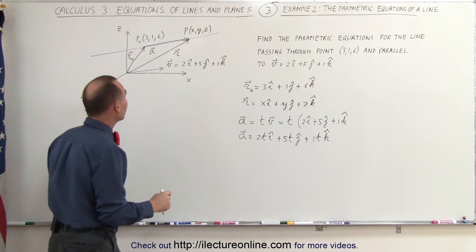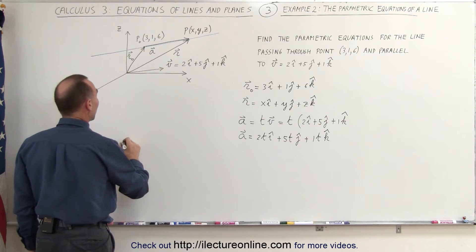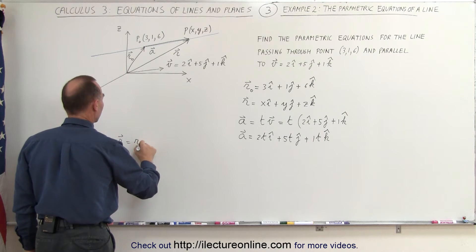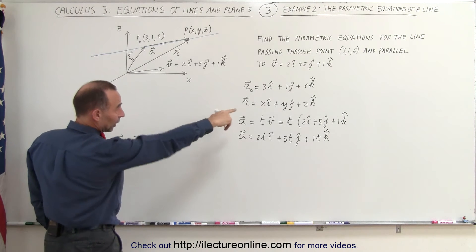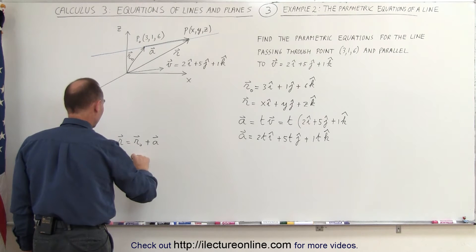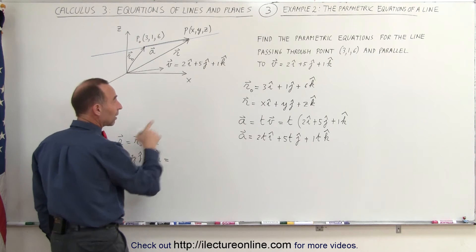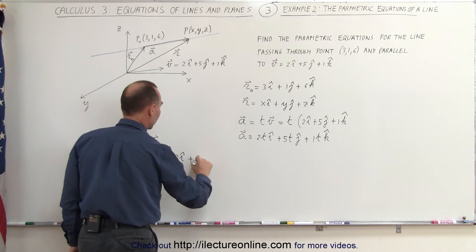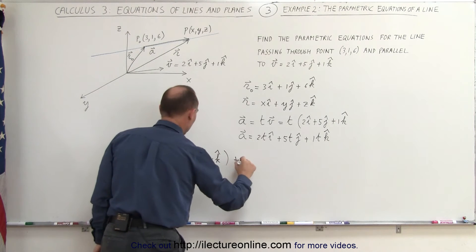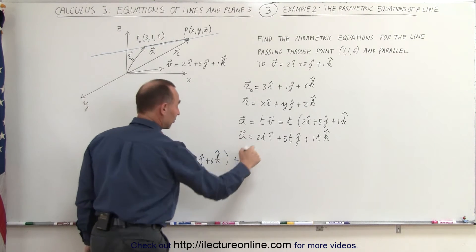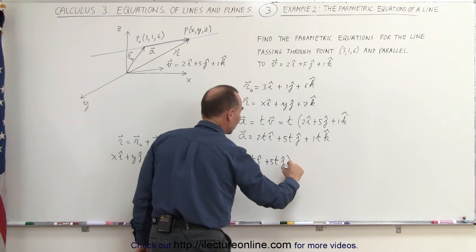Using vector addition, the R vector is simply the sum of R-sub-zero plus the a vector. We write R equals R-sub-zero plus a, so xi + yj + zk equals (3i + 1j + 6k) added to the a vector, which is 2t in the i direction plus 5t in the j direction plus 1t in the k direction.